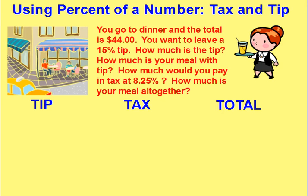You can use percent of a number to figure your tax and tip. Suppose you go to dinner and the total is $44 for your food. If you want to leave a 15% tip, how much should you leave? How much is your meal with tip? And how much would you pay for tax at 8.25%? And how much would your meal be altogether? Let's start with the tip.